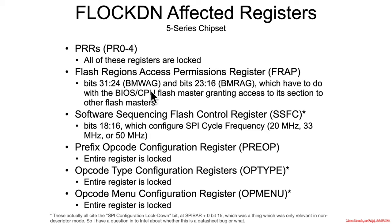FRAP has a couple of other things inside it having to do with BIOS master write access granting and read access granting — this notion that different SPI bus masters can or cannot access each other's flash. There are registers that say, for example, I'd like to grant the management engine access to my flash, or I want the Intel Gigabit Ethernet engine to read from my BIOS flash. Those bits are hopefully just set to zero, but if they're set, they will be locked down when FLOCKDN is set.